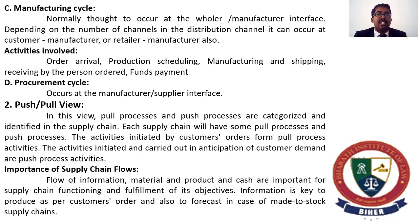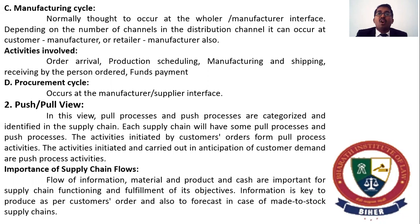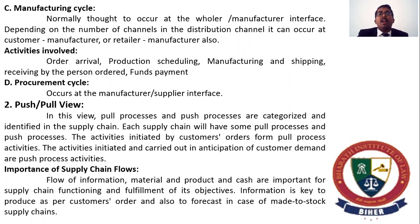Procurement cycle occurs at the manufacturer or supplier side. In the push or pull view, pull processes and push processes are categorized and identified in a supply chain. Each supply chain has some pull and some push processes. Pull process activities are initiated by customer orders, while push process activities are carried out in anticipation of customer demand. The flow of information, materials, products, and cash is important for supply chain function and fulfillment of objectives. Information is the key to producing as per customer order and forecasting in make-to-stock supply chains.